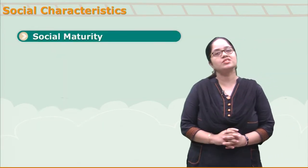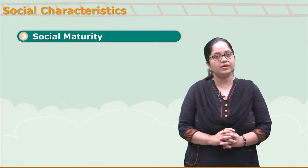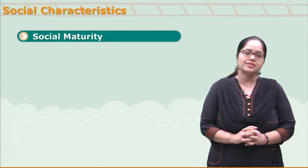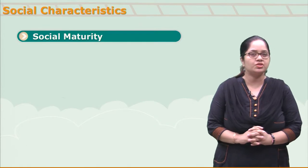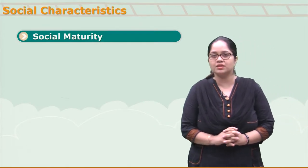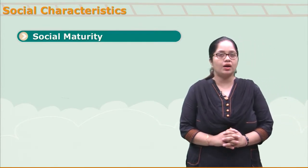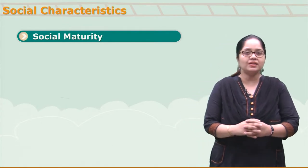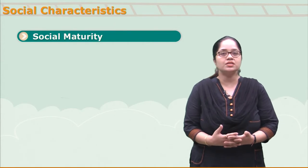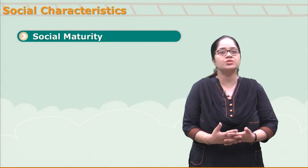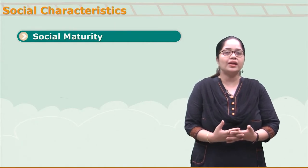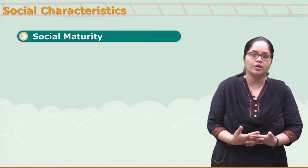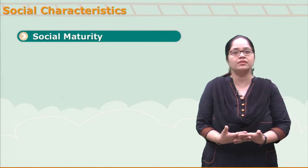Another change which takes place in social development at this stage is social maturity. During childhood, children are not bothered about how they should behave or what the reaction of others will be. But at this stage, adolescents become socially mature. They try to establish a significant relationship between themselves and their environment.